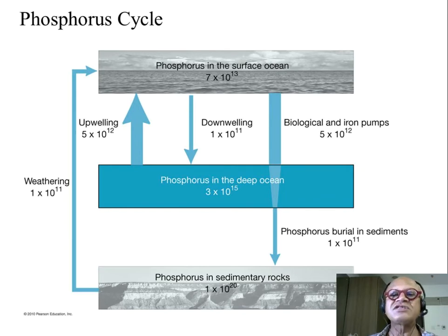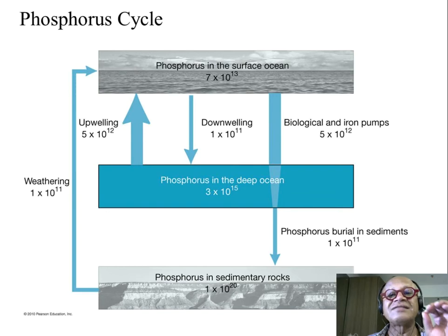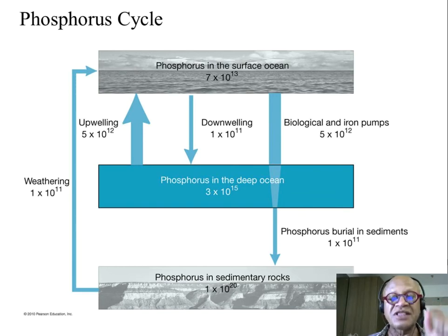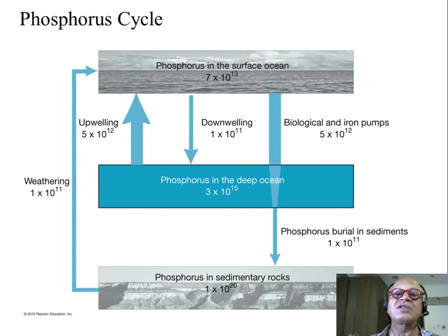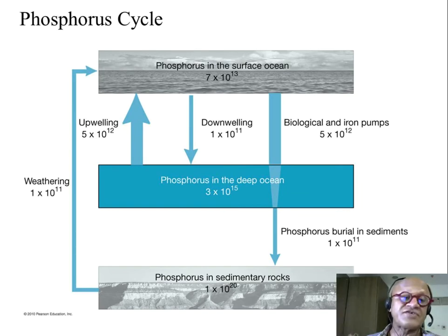So the phosphorus cycle — the big difference is that there is no phosphorus in the atmosphere. There is lots of carbon in the atmosphere and lots of nitrogen in the atmosphere, but phosphorus mostly cycles through soil and ocean. Whatever little phosphorus there is is just being airborne or carried — the atmosphere is not a significant reservoir of phosphorus.